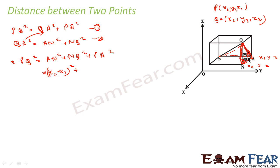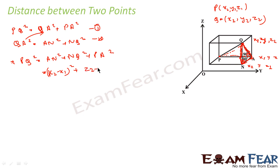Similarly for NQ, this is the displacement along the Z axis. At point N the Z coordinate is Z1 (from P) and at Q it is Z2. The X and Y components are the same, so NQ² equals (Z2 − Z1)².